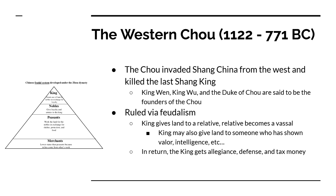The Shang ruled — and then the Zhou ruled — by using feudalism. If you've ever studied European history and know about kings, knights, and peasants, this isn't that much different. You're going to have a king at the top. Below the king you're going to have nobles, and the king is going to give these nobles land. In exchange, the nobles give their loyalty to the king and pledge to protect him. The king gives land to relatives or people who have done something to benefit him — essentially a reward.